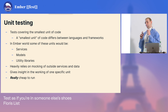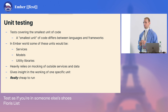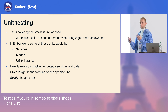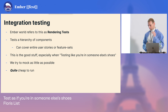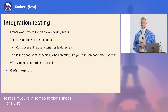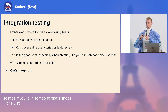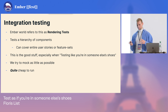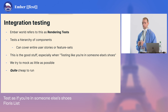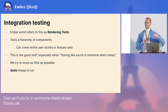One level up is unit testing. These cover the smallest unit of code, which differs between languages and frameworks. In the Ember world, these are things like services, models, or utility libraries — stuff that doesn't really need to be rendered onto a screen. It relies on mocking things out; you test the unit and get confidence that it works on its own. These are really cheap to run, so we like that. Then one level up: integration tests — this is the main body, which in Ember we'd call rendering tests. These test components or a hierarchy of components. You get fantastic chunks of your application that you can test against user flows or entire feature sets, and because they're cheap to run you can really put yourself in the shoes of an end user and go through different flows.